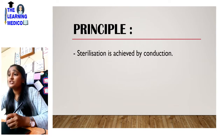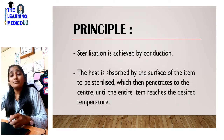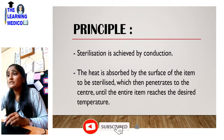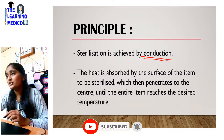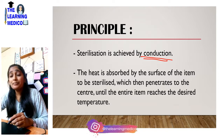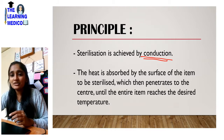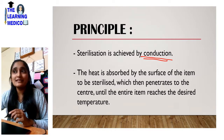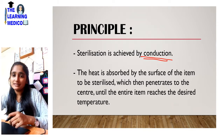The principle: sterilization is achieved by conduction. What happens in Hot Air Oven sterilization? The heat is absorbed by the surface of the item to be sterilized, which then penetrates to the center until the entire item reaches the desired temperature. When you look at the procedure, you will understand the actual principle.